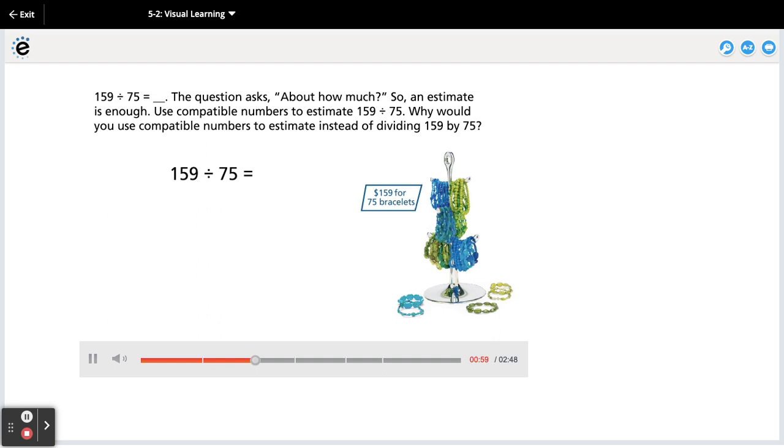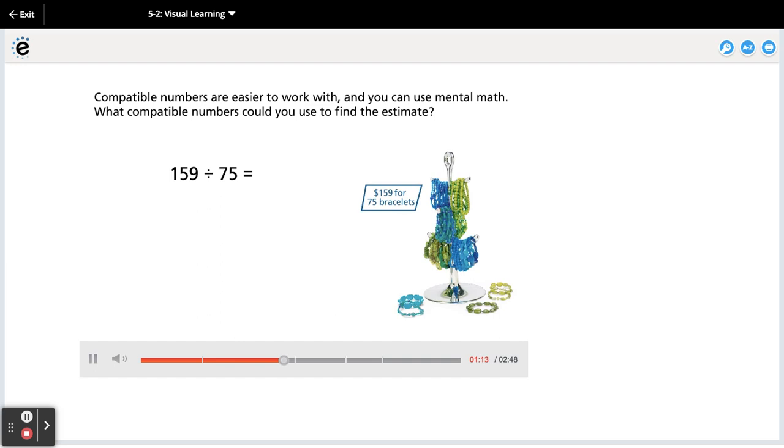Use compatible numbers to estimate 159 divided by 75. Why would you use compatible numbers to estimate instead of dividing 159 by 75? Compatible numbers are easier to work with and you can use mental math. What compatible numbers could you use to find the estimate?